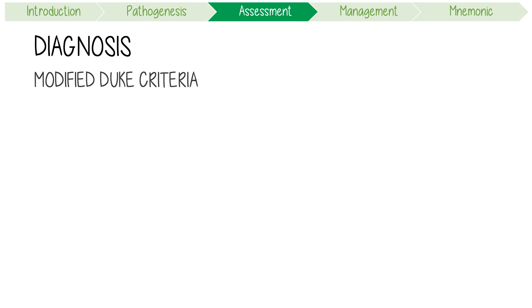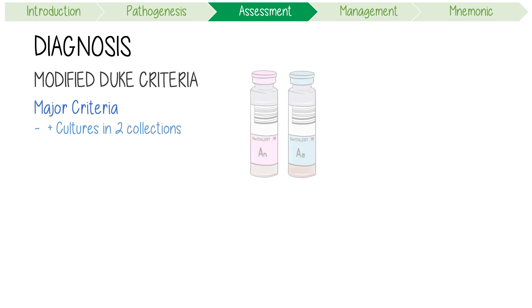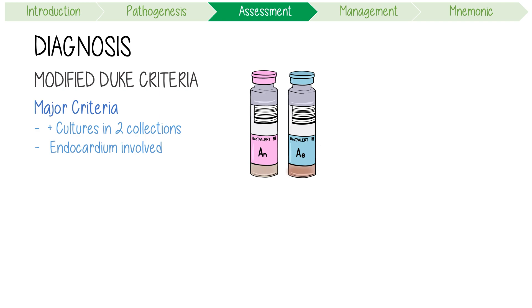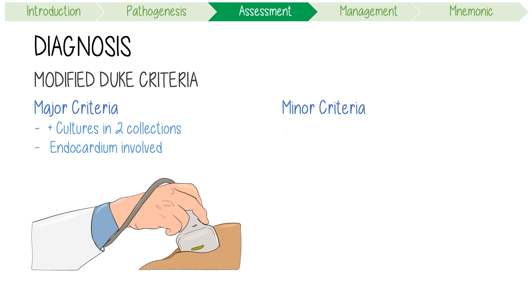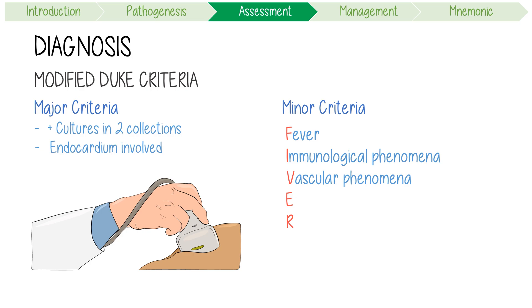The diagnosis can be made using the modified Duke criteria. There are two major criteria: positive blood cultures in two separate collections, and evidence the endocardium is involved, for example a positive echo showing vegetation. There are five minor criteria forming the FIVA acronym: fever, immunological phenomena like Osler nodes, vascular phenomena like Janeway lesions, evidence of infection with a single positive culture, and clear risk factors like IV drug use.